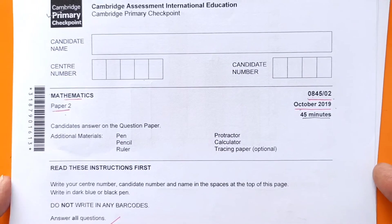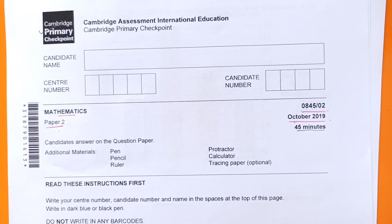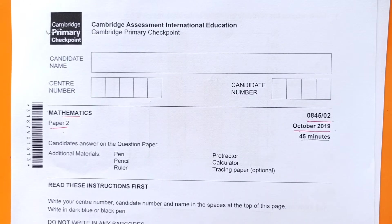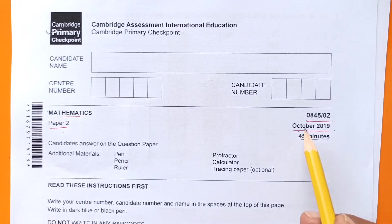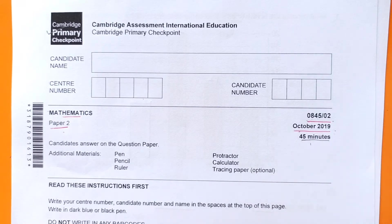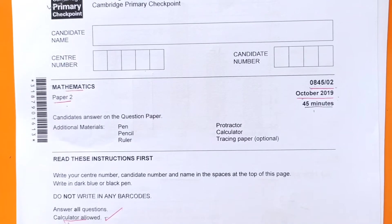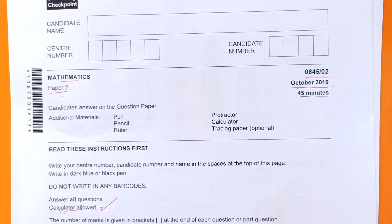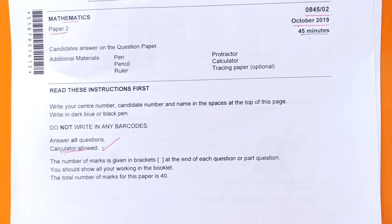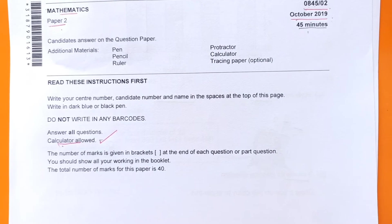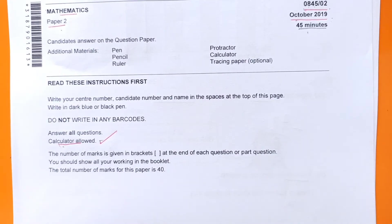Hello guys, welcome back to my channel. This is the second part of Primary Checkpoint Mathematics Paper 2 of October 2019. We have done questions 1 to 16 in the first part, so we will do the remaining questions in this part. Here are the instructions - you can take a screenshot and go through them afterwards. Let's start with number 17.